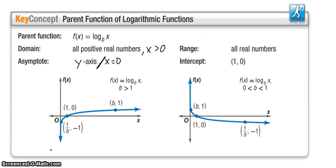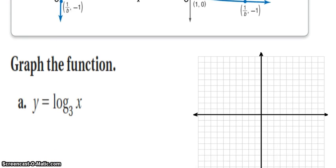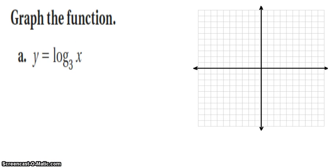The best way to graph these is going to be to rewrite it as an exponential and then plug in some values. So if I'm looking at this, I have log base 3 of x equal to y. So I'm going to rewrite it as an exponential. Base of 3, exponent of y, argument of x.